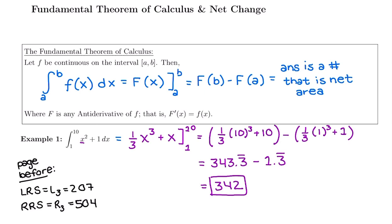The left Riemann sum was too small at 207. The right Riemann sum was too big at 504. They were way off from the answer because we didn't have enough subintervals, but now we have this shortcut where we know that the definite integral measures the net area under the curve.